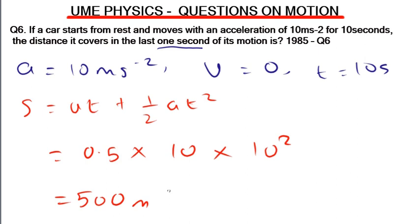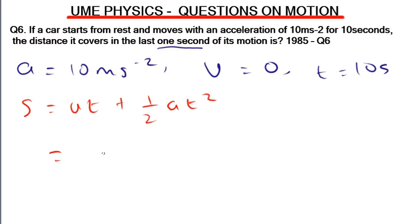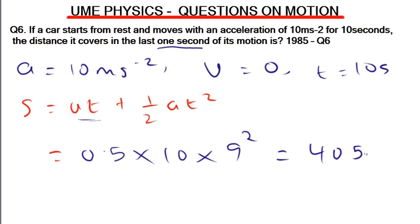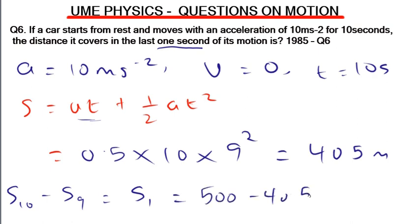Next, we calculate the distance covered in 9 seconds: s = 0 + 0.5 × 10 × 9² = 405 meters. The distance covered in the last one second is the difference: 500 - 405 = 95 meters. So the car covers 95 meters in the last second of its motion.